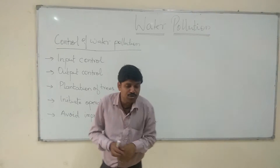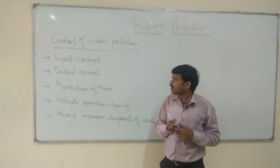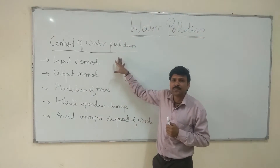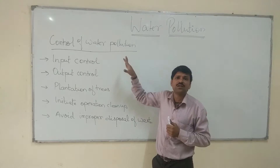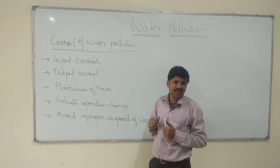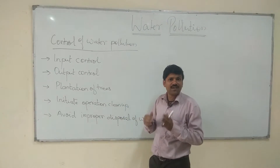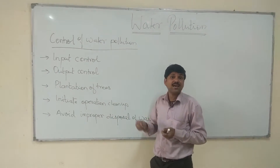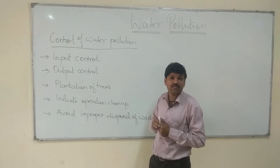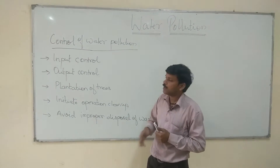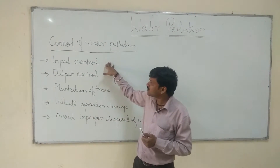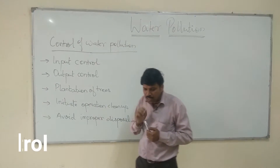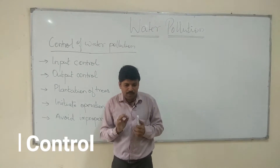First of all, we have to keep in mind what are the sources of water pollution. If we are aware of the sources of water pollution, then we can easily control the problem. So the control methods are: number one is input control.